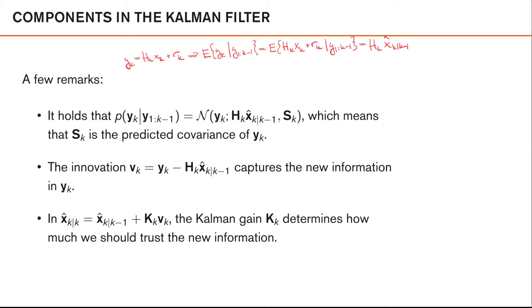Now we see that the conditional expected value is by definition precisely this, so how can we interpret this? We see that the expected value of our observation given our previous observations is just hk times our predicted mean of the state. So this is what we expect the observation to be given all our previous observations.